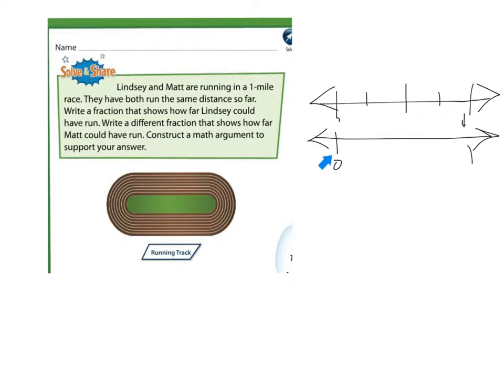And this one — how about some eighths? We'll split this one into eighths. Again, I'm going to start at halfway because it's an even denominator. Now we're going to double check: one, two, three, four, five, six, seven, eight equal parts. Let me just fix this one line here so we can tell that that's the one mark.